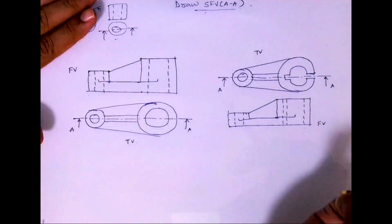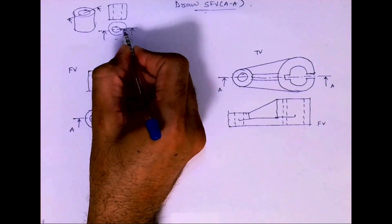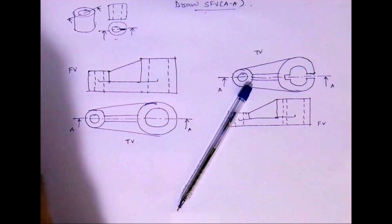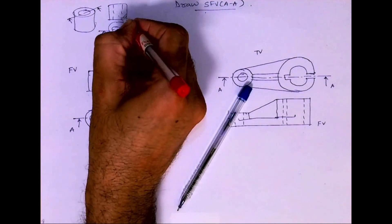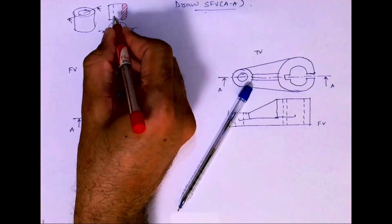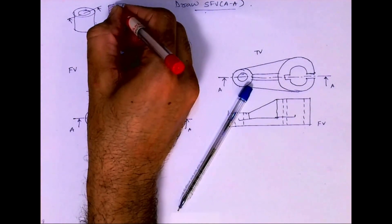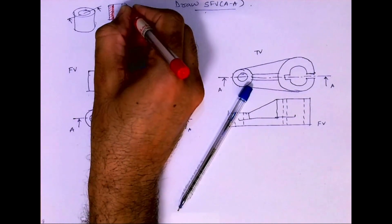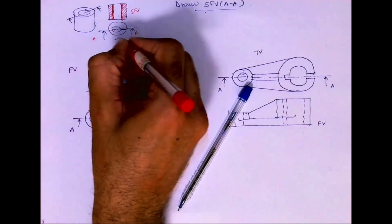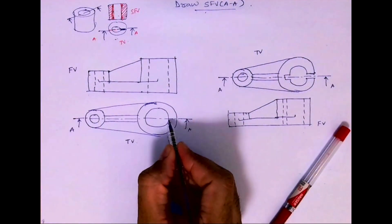Now in this, the main object is not given as 3D — only 2D is given and we have to do the section. So what we will do: wherever the object is getting cut, you do hatching — this is the first rule we will follow. Where nothing is getting cut, nothing goes there. Where it is getting cut again, that will be hatched. The dotted line which gets cut will become dark, or it will go away. This is sectional front view from top view.